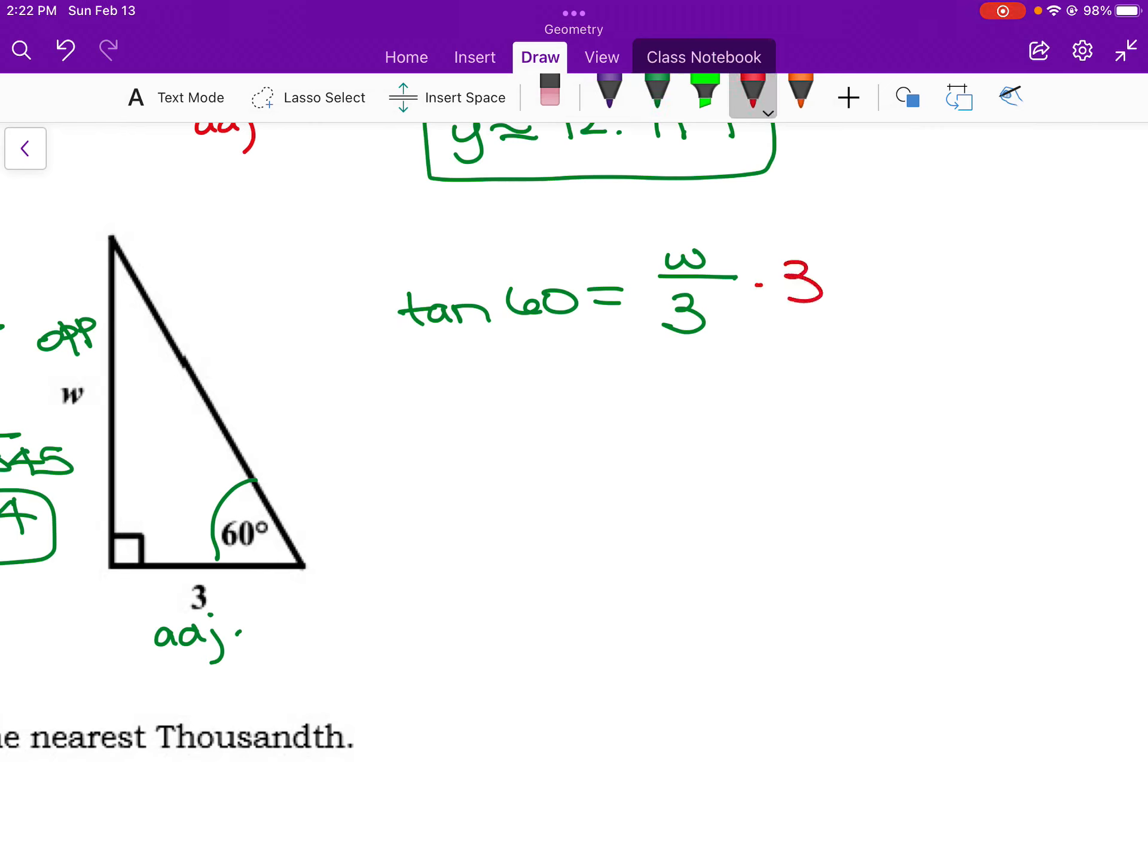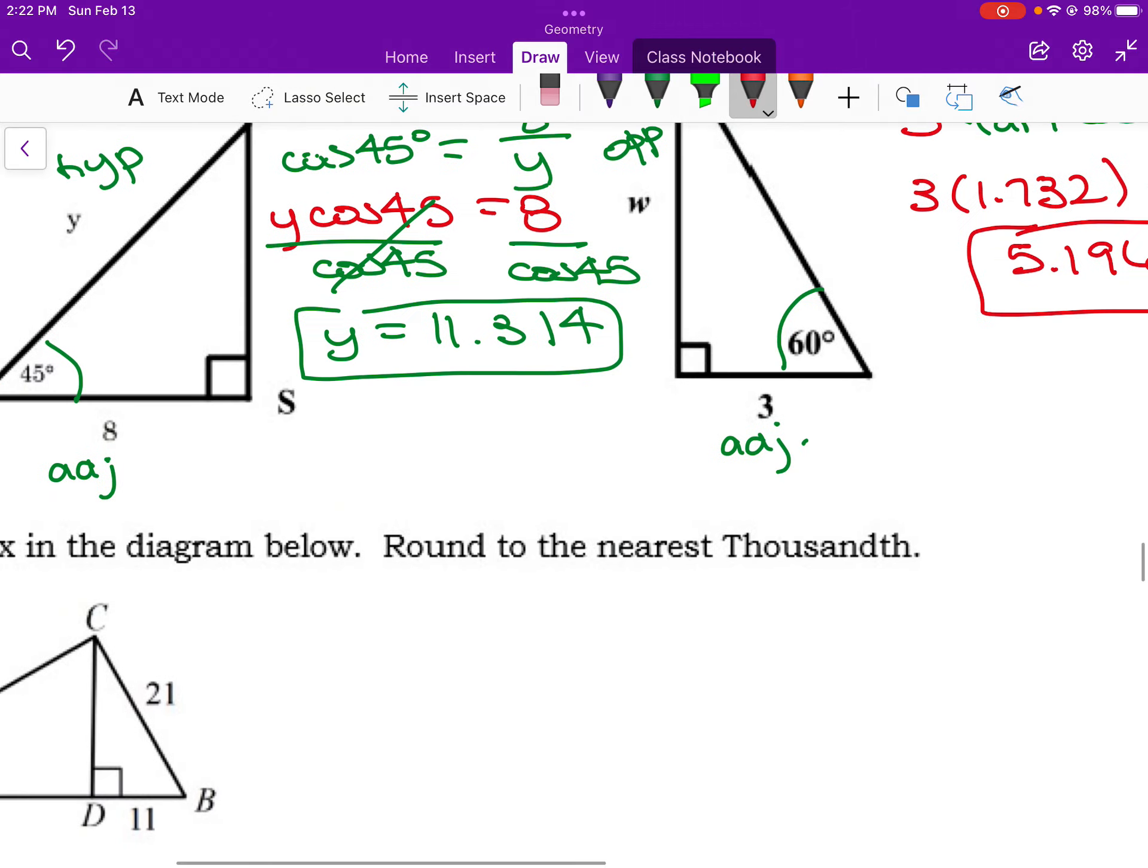So this is the one that we don't mind, right? We just have to multiply that 3 over to cancel. Tangent of 60 is 1.732. So we just multiply that by 3 to get w. So 5.196 is w.